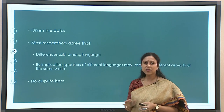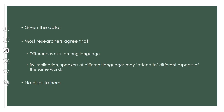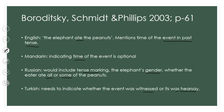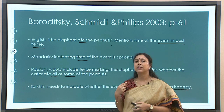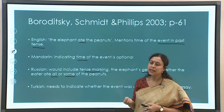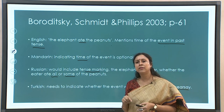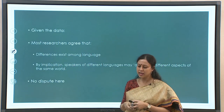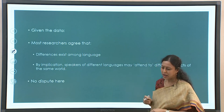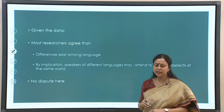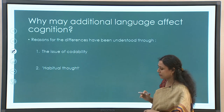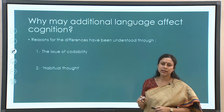Given this data, most researchers agree that languages are different — there are many differences in terms of concept-to-word mapping and concept-to-grammatical-structure mapping. By implication, speakers of different languages may attend to different aspects of the same world. For example, a Turkish speaker must constantly be aware whether every event they describe was witnessed or hearsay. This is also called habitual thought — how languages can affect our habitual thought process. So far there is no dispute: languages differ in codification and as a result the habitual thought process may also differ.